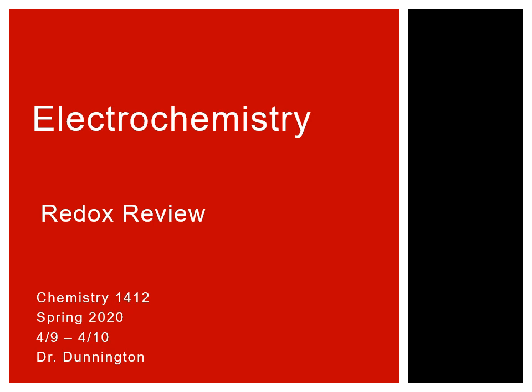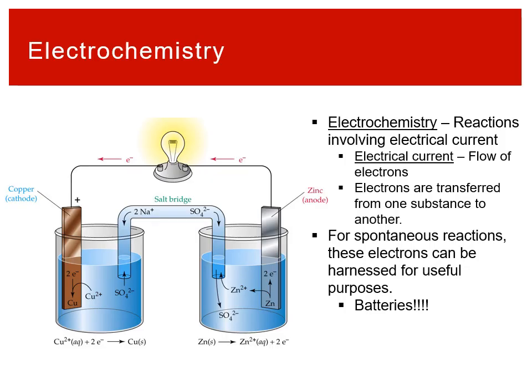Welcome to chapter 17 on electrochemistry. Electrochemistry, as the name implies, deals with chemical reactions that involve electrical current — specifically the flow of electrons being transferred from one substance, atom, ion, or compound to another.